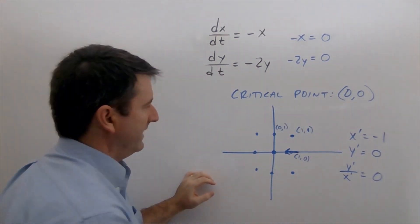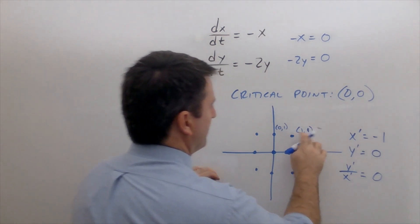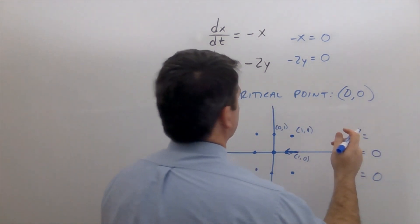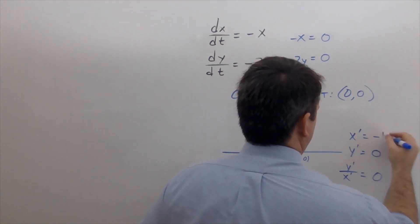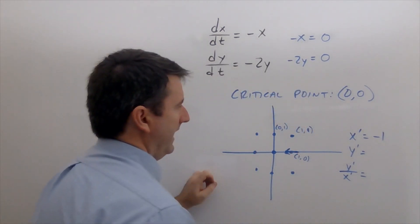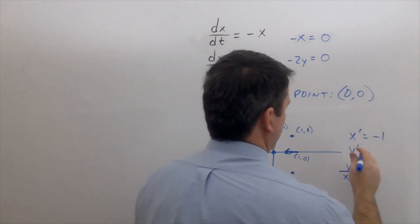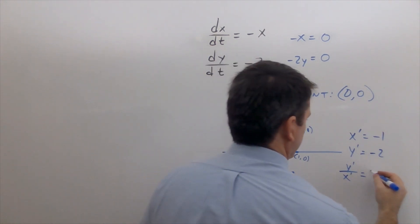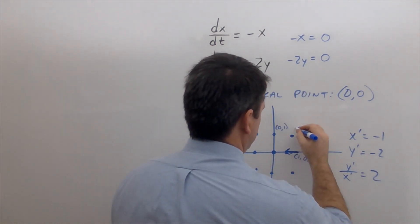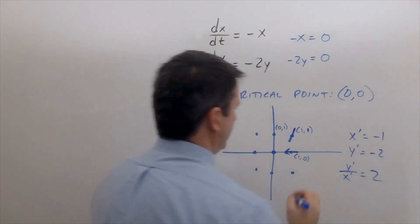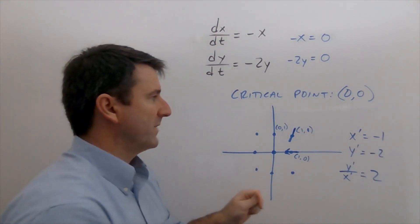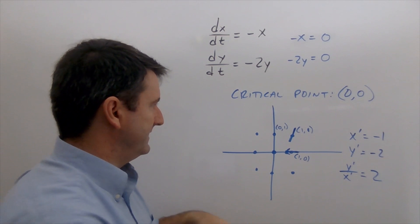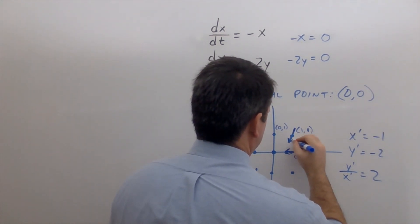Working counterclockwise, at the point (1, 1): x prime is negative 1 and y prime is negative 2. So the slope, change in y over change in x, is 2. The change in x is negative so it's going to the left, and the change in y is negative so it's going down — the arrow points down and to the left.